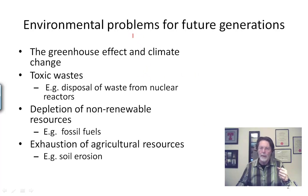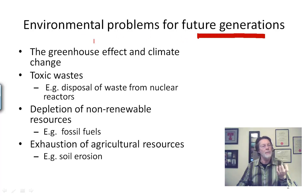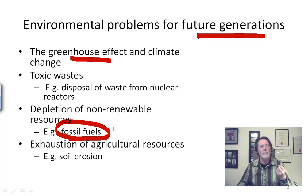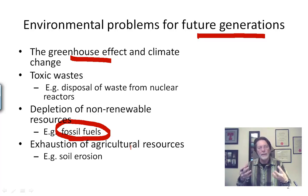There are lots of environmental problems lurking, and many of these are going to affect future generations. Some of them affect us now, and some of them are going to be a lot worse in the future, for posterity. For example, the greenhouse gas effect and the ensuing climate change, disposal of toxic wastes, the depletion of non-renewable resources — our supplies of oil are going down, maybe not coal so much, but oil — and the exhaustion of agriculture and other resources. These are all environmental problems that are going to affect us marginally, and affect future generations even more.